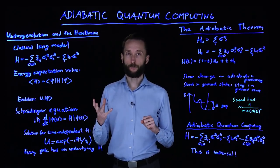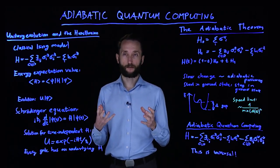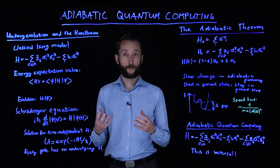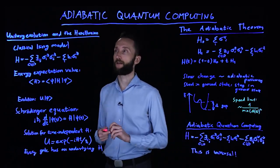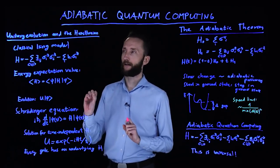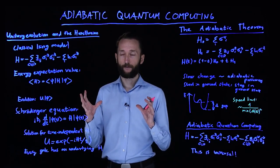So we talked about Hamiltonians, which describe the energy of the system, and we talked about unitaries, which describe the evolution of a system.